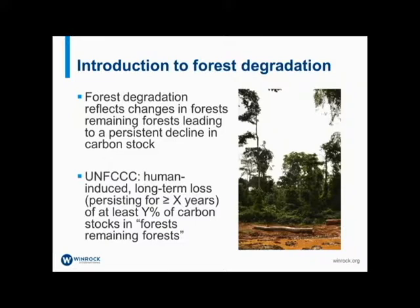In forest degradation, you're going from an area with a higher carbon stock forest to an area with a lower carbon stock forest, but it stays as forest. Common examples are selective logging, where a few high-value trees are cut but the forest remains; fuel wood collection, where fuels are taken out for cooking, heating or industry, but the forest remains; or forest fires, where fires escape or are purposefully set, removing some trees but not causing a deforestation event.